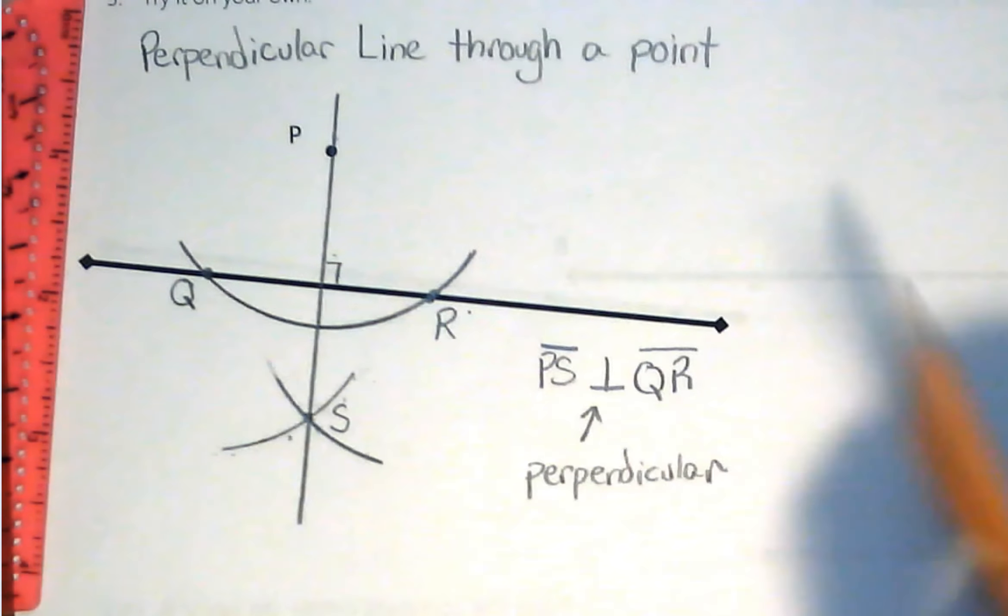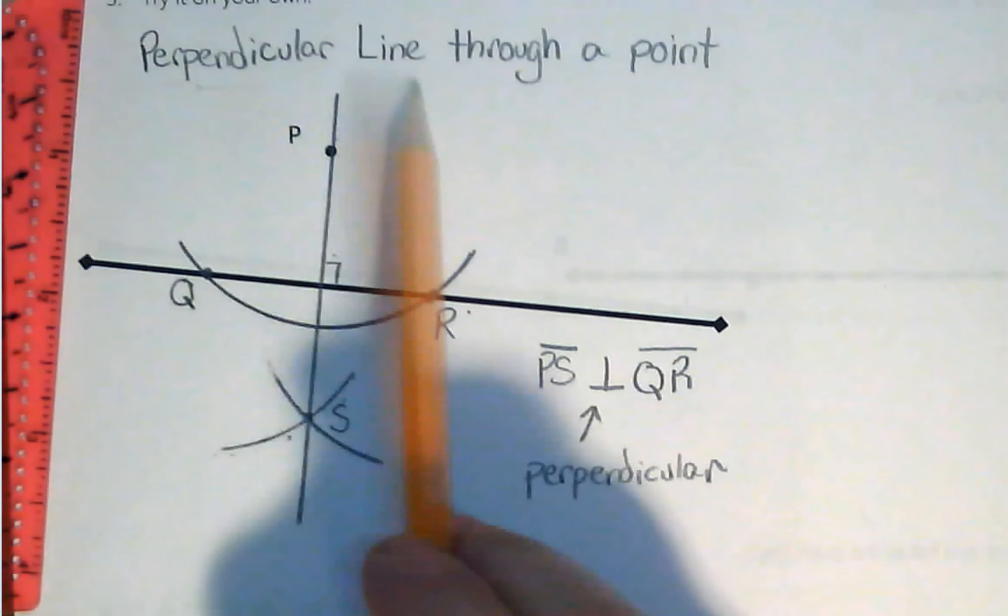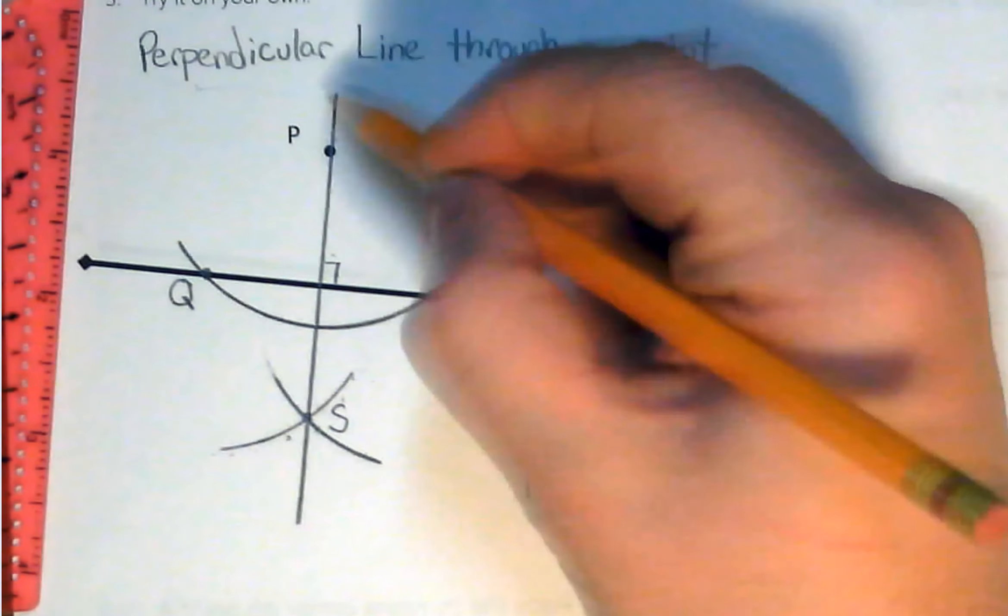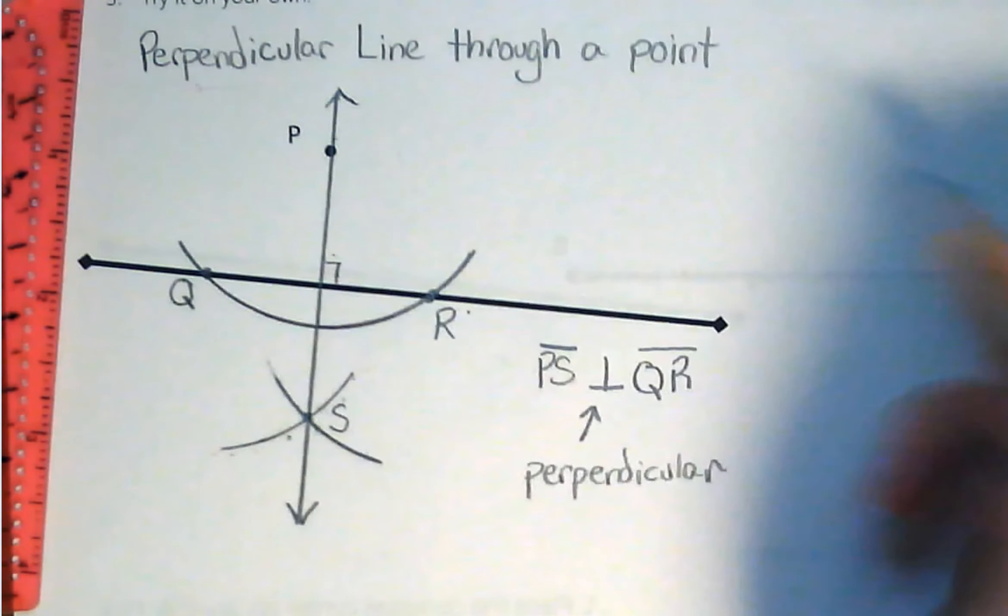So, we successfully created a perpendicular line through a given point. And that's it.